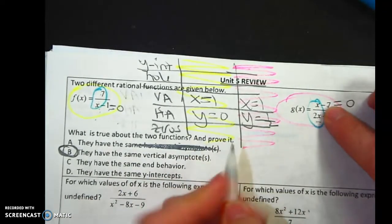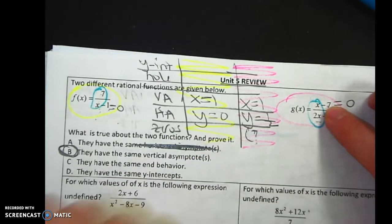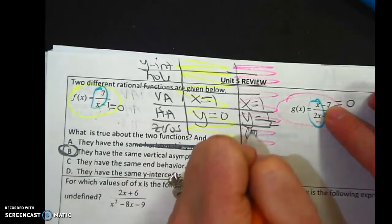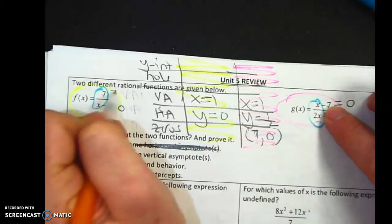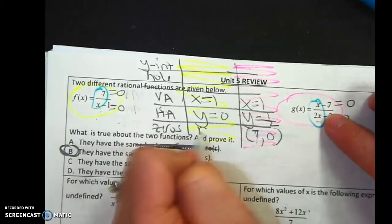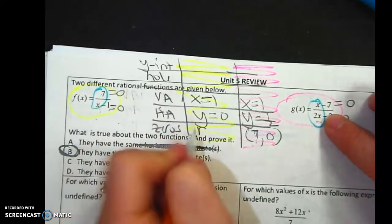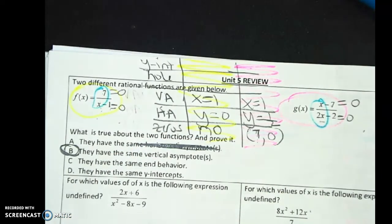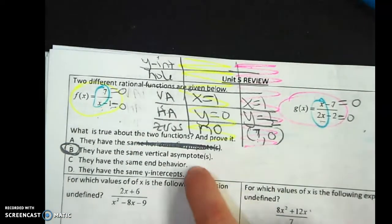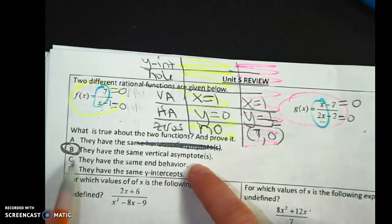The zeros are determined by setting the numerator equal to zero, so they don't have the same HA. Here it's x equals seven, or seven comma zero. And here, if I set that equal to zero, there are no zeros. So they're not the same.